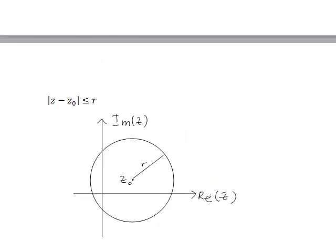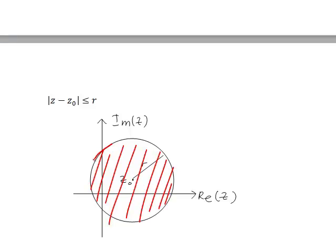First, what happens if we have |z - z₀| ≤ r? This represents all points that fall inside the circular region, and because it's less than or equal to r, points on the circular boundary itself. To represent this region, we shade the inside of the circle and include the boundary.